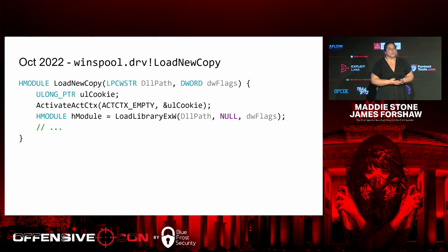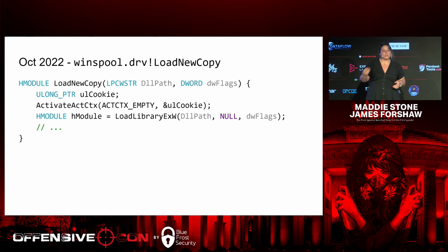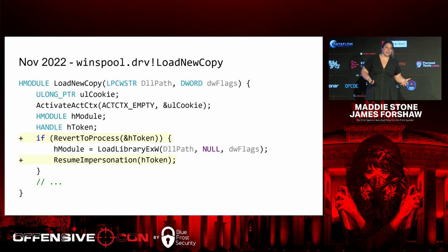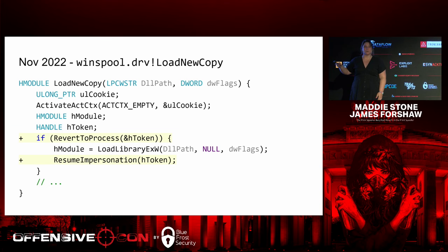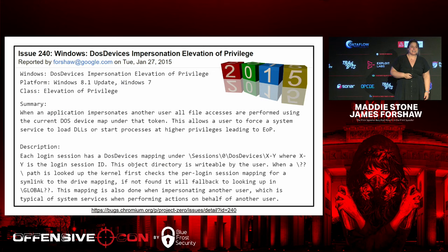In October, during the vulnerable version, load_new_copy would immediately call activate_activation_context and then immediately go into a load library call. In November, the change was simply to no longer do impersonation around that load library call, and after doing load library, then resume impersonation again.